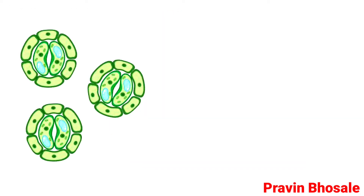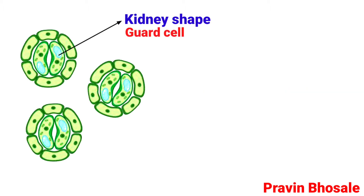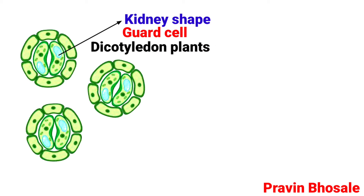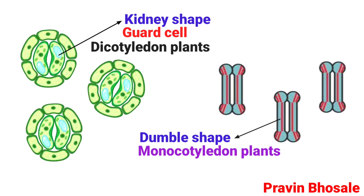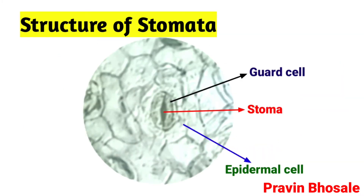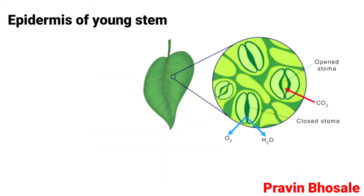Stomata are minute elliptical pores bounded by two kidney-shaped guard cells in dicotyledon plants and dumbbell-shaped guard cells in monocotyledon plants. The stomata are minute apertures located in the epidermis of young stems and leaves.